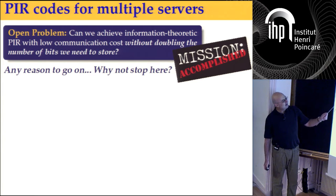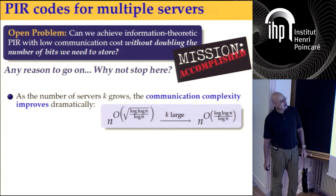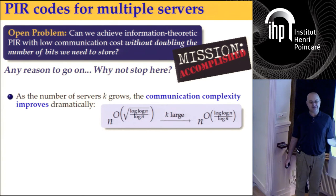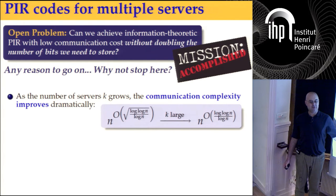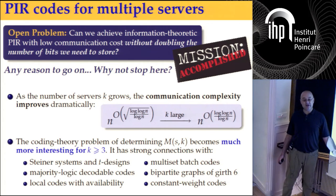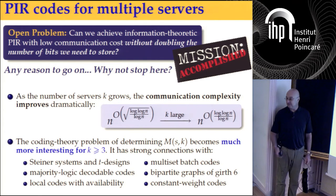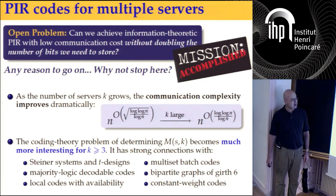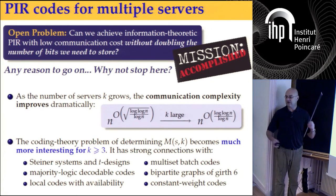We can take a two-server Dvir-Gopi protocol and get good complexity. But why not stop here? Because as K grows, we have much better communication complexity, and the coding problem becomes really interesting for K at least three, with connections to many different topics: coding theory, combinatorics, multi-set batch codes, and more.